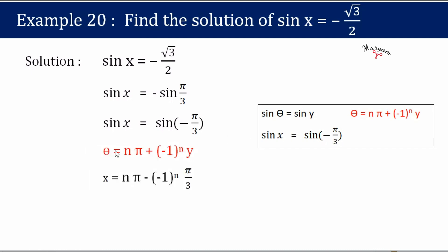So here theta will be x and y will be minus pi by 3. So let's substitute the values of theta and y, that is theta is x, n pi, minus 1 whole raised to n, and y is minus pi by 3.